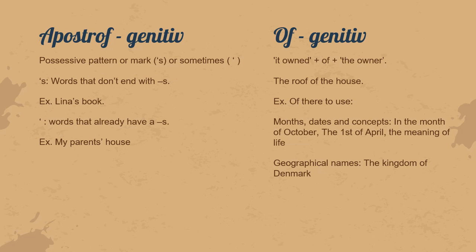The second type is of-genitive, where we have the thing that's owned plus 'of' plus the owner. For example, 'the roof of the house'. It can be used in different contexts — for example, for months and dates: 'in the month of October' or 'the first of April'. It can also be used for geographical names, for example 'the kingdom of Denmark'.